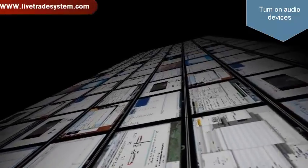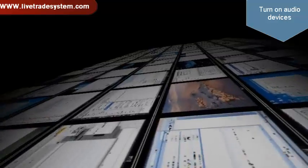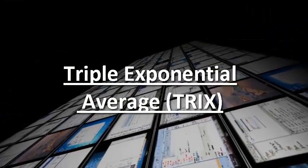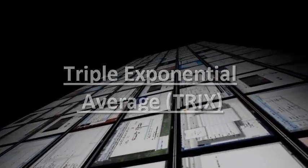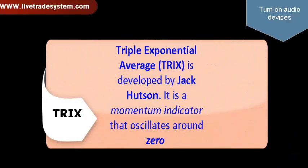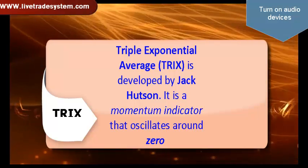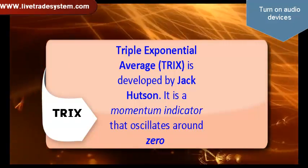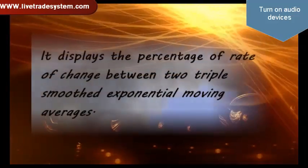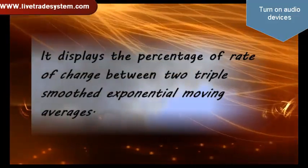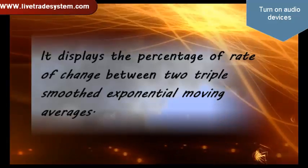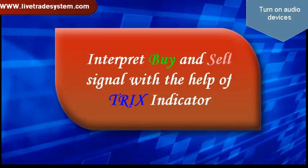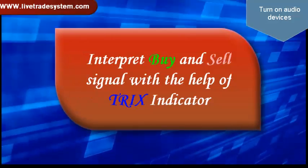Hello friends. I want to talk about an excellent indicator today called the Triple Exponential Average indicator, developed by Jack Hudson. It is a momentum indicator that oscillates around zero, displaying the percentage rate of change between two triple-smoothed exponential moving averages. It is very easy to interpret buy and sell signals with the help of the TRIX indicator.